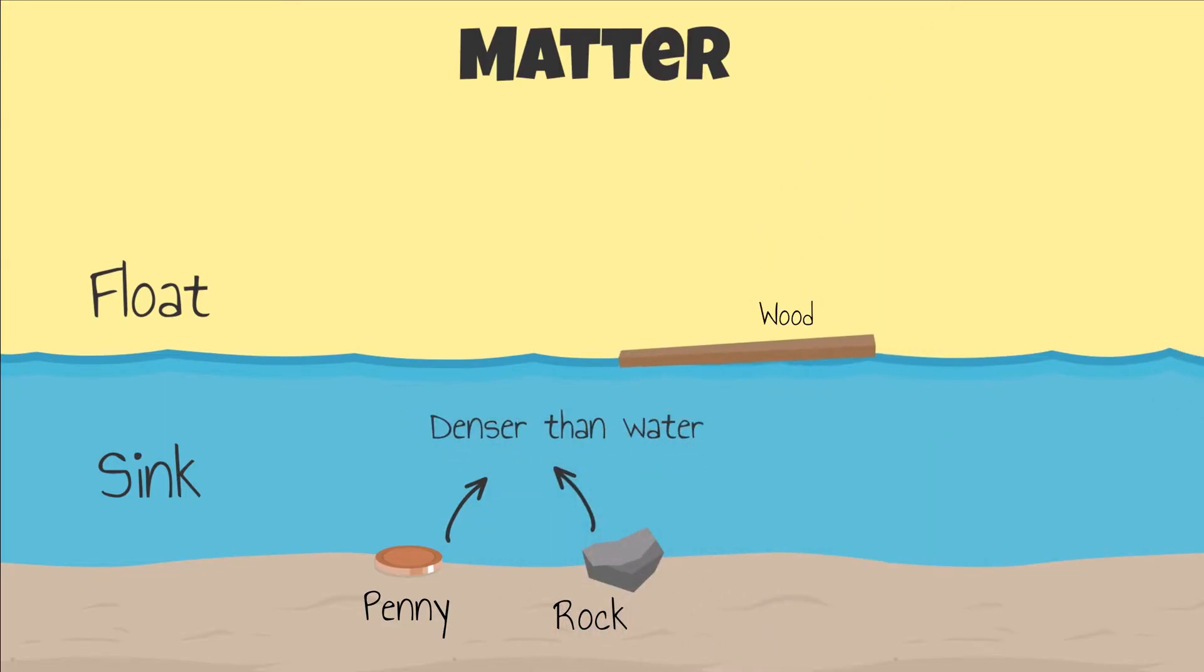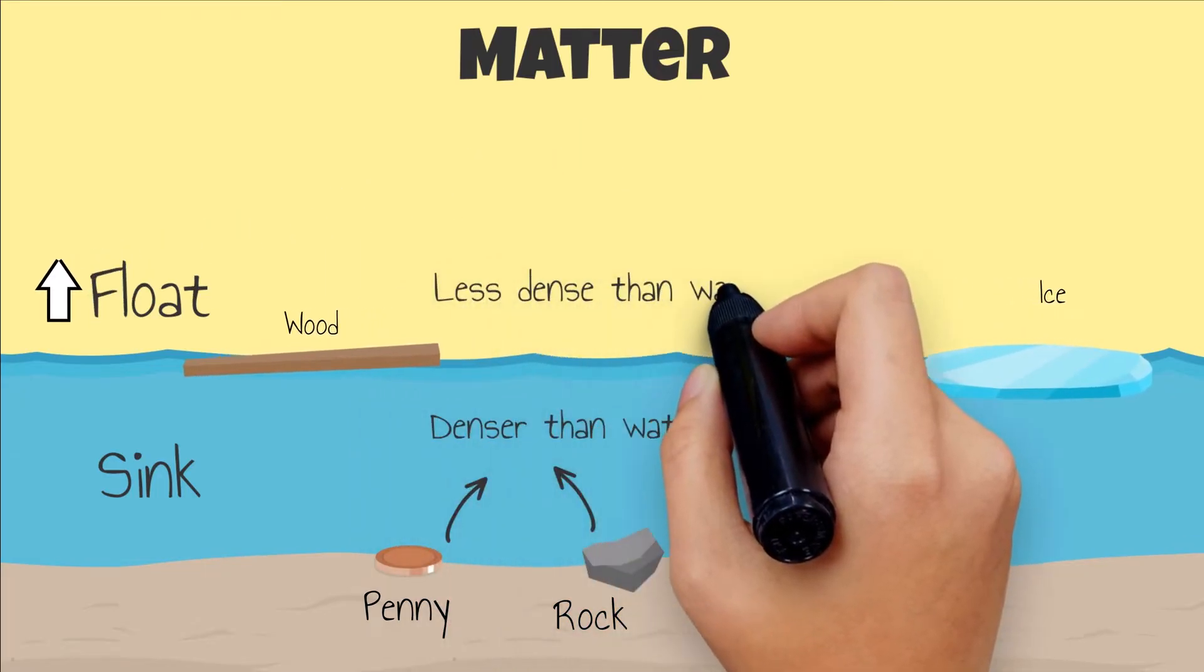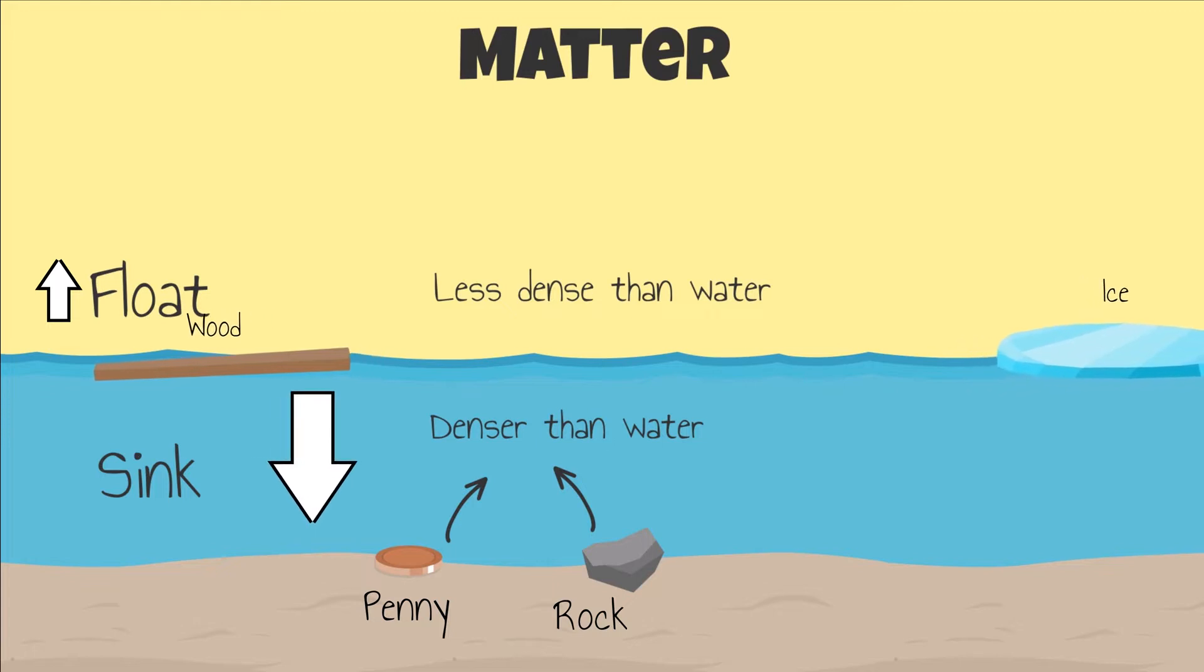A piece of wood will stay floating on top because it is less dense than water. Ice will also float. When an object floats in water, it is less dense than water. When an object sinks, it is more dense than water.